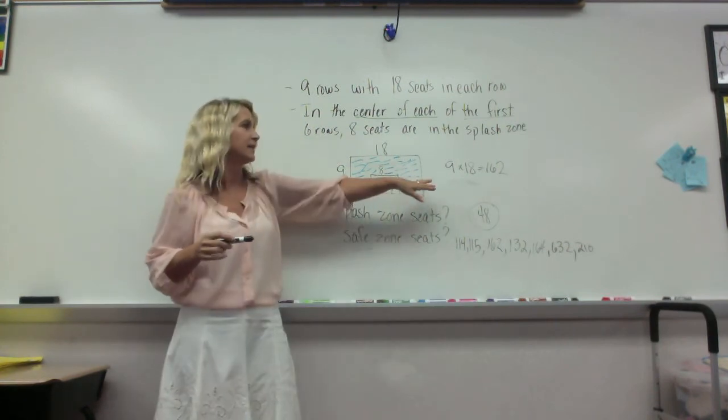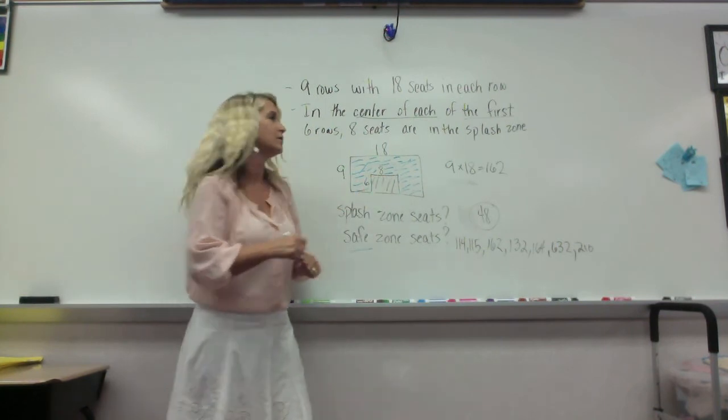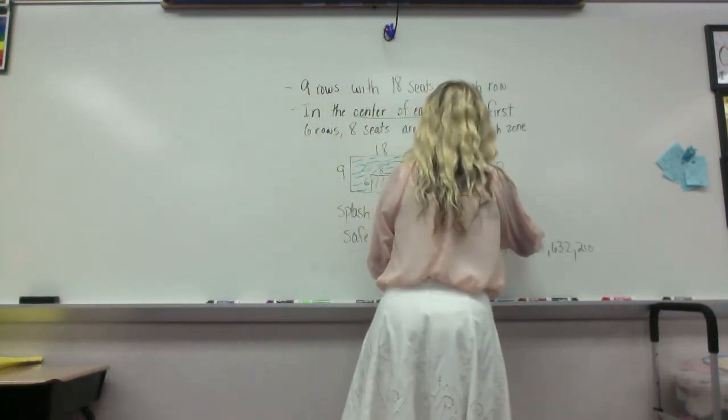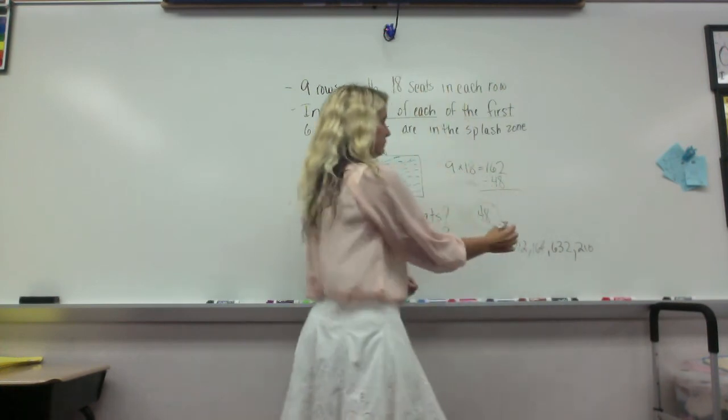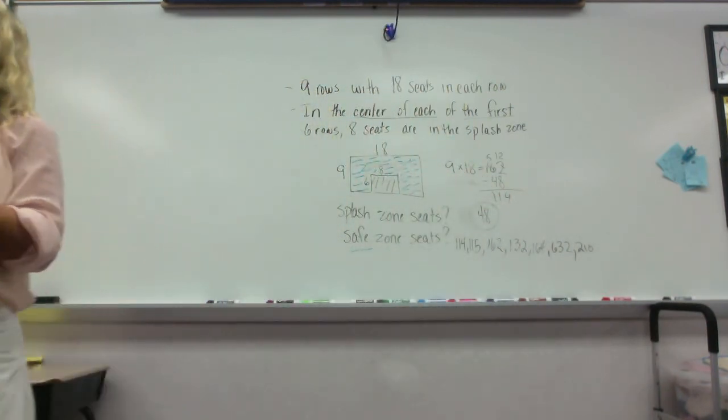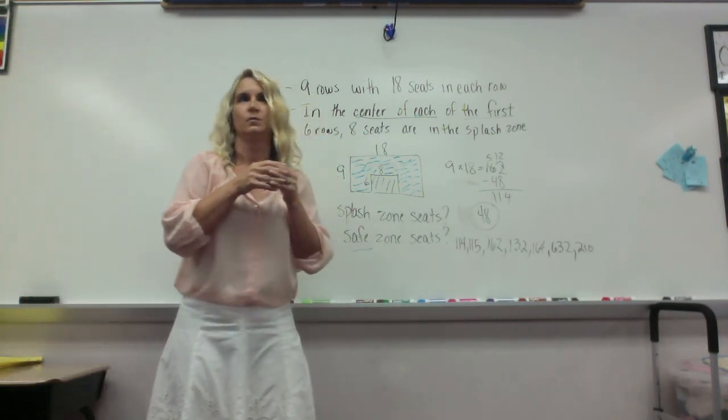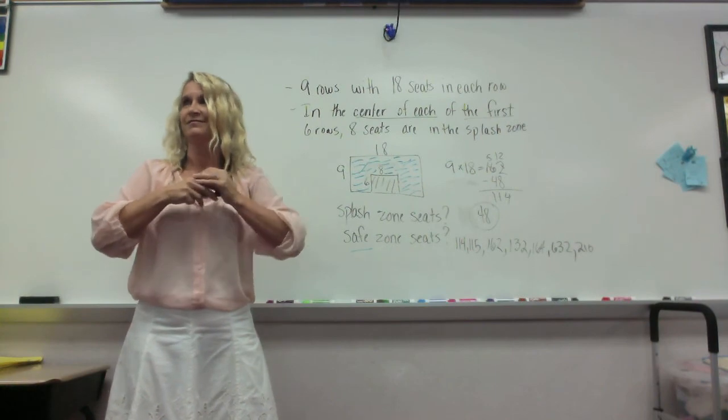You subtract it. Instead of adding the 48, we're going to subtract it because that's the part we want to take out. So if we subtract 48, how many seats are in the safe zone, class? 114. You guys want to do another one? No.